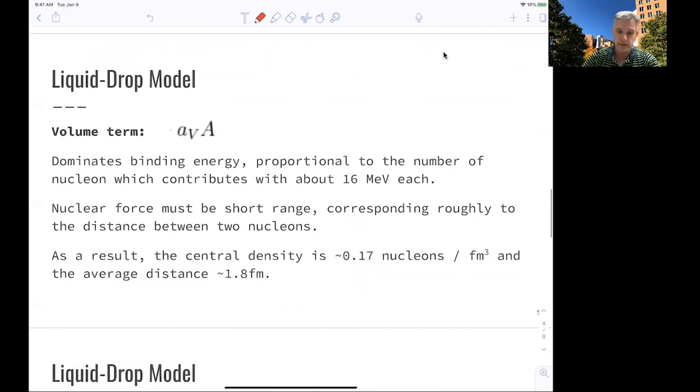All right. So as the name says, liquid drop model, we can think about, in some essence, about a nucleolide atom as being built out of a soup, a liquid, of protons and neutrons which are bound together. So the first term which contributes to the binding energy is the so-called volume term. This dominates the binding energy and is proportional to the mass number.